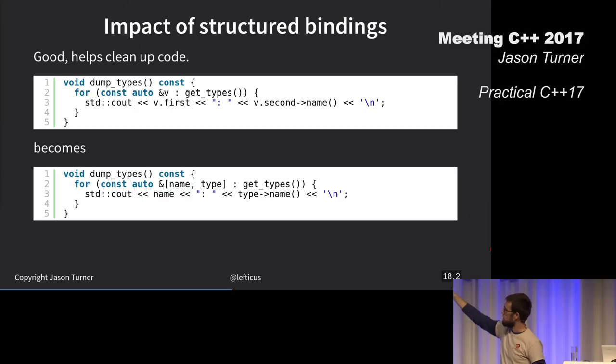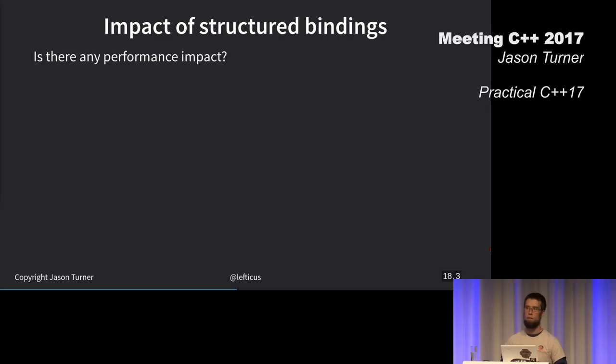Structured bindings with ranged for loops, this is good stuff. Nice combination. The question is, is there any performance impact? Does anyone think there might be any performance impact? Probably not? Which one of these two options is better?